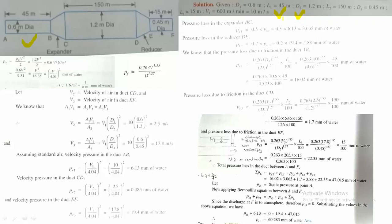Before proceeding, since the problem continuously refers to dynamic head, let us first understand the concept. We already know Bernoulli's equation: P/ρg = v²/2g. If we want to find the equivalent pressure related to velocity, we correlate: P/ρg = v²/2g, so pressure PV equals ρv²/2.